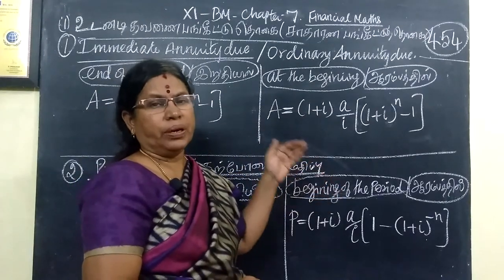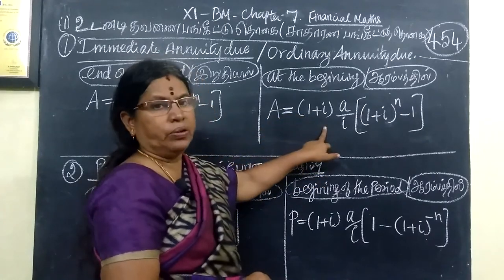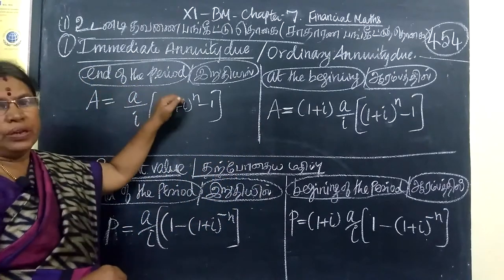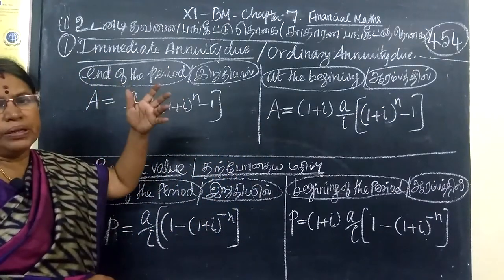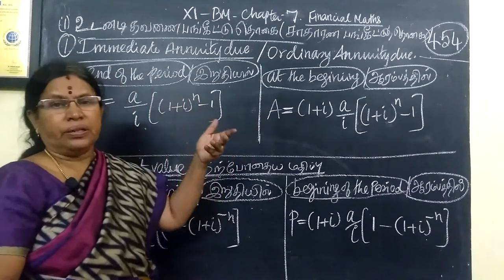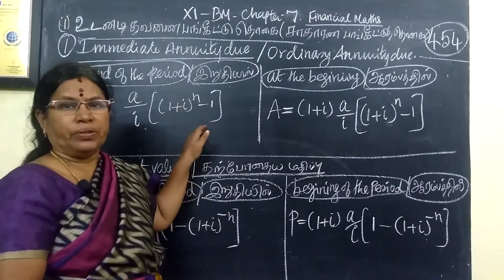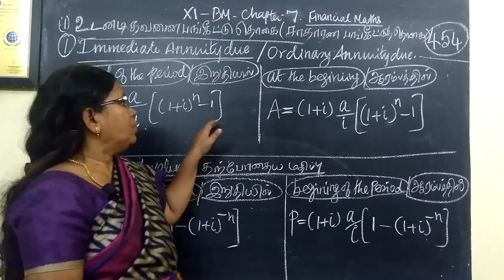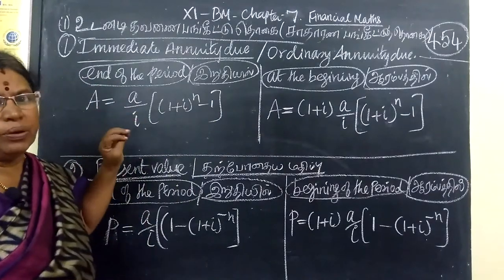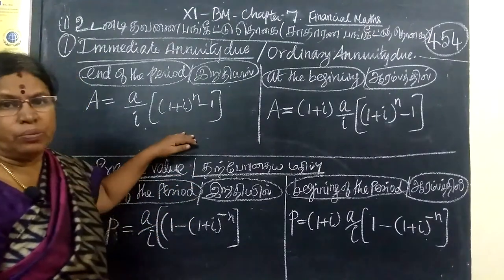Now we will use the housing loan. We will use the formula for the beginning of the period and the formula for the amount of the period. And we will use the formula for the amount of payment. When we purchase it, we will use the formula for the amount of payment.